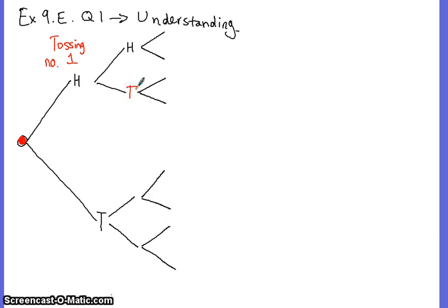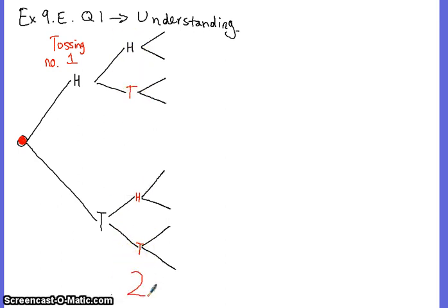If it landed as a tail, you pick it up, you flick it again — what could it be? A head or a tail. That constitutes tossing the coin number two, the second time you toss the coin. And then along here, this constitutes tossing that coin a third time, which is what the instructions of the question are.